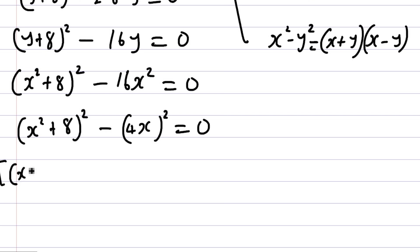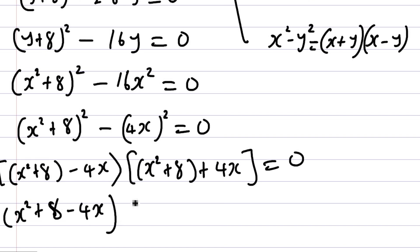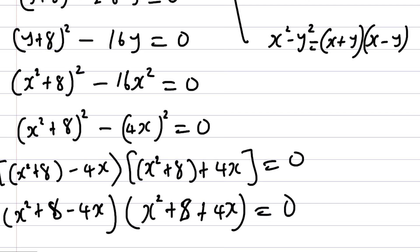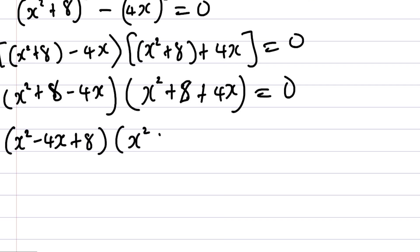Using the difference of two squares, the first term is (X squared + 8) and the second term is 4X. So this becomes: (X squared + 8 minus 4X) multiplied by (X squared + 8 plus 4X) equals zero. Opening the brackets gives us (X squared minus 4X plus 8) times (X squared plus 4X plus 8) equals zero.